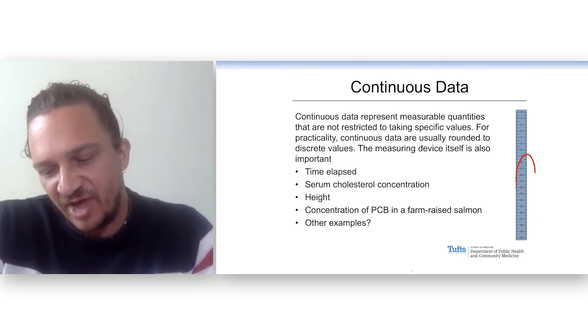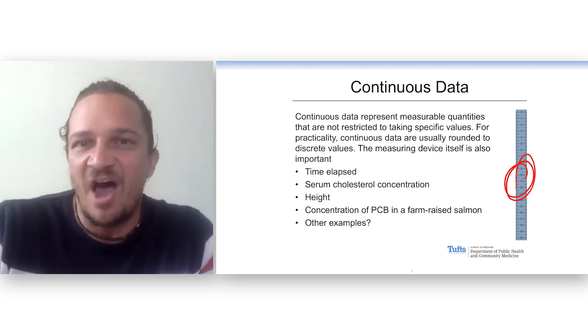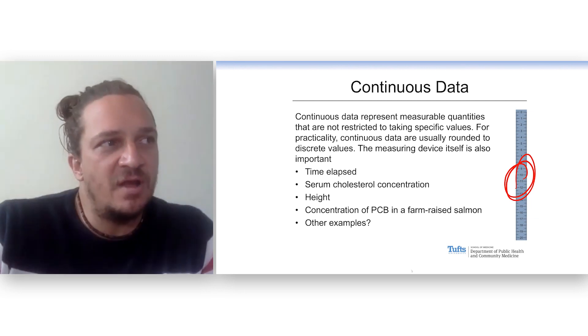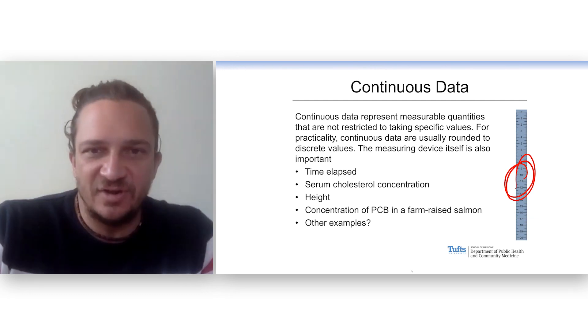If you had a better, better tape measure, you could actually see that one person is somehow a little bit taller than the other. And so continuous data are things such as time or the measurement of an enzyme or the measurement of anything that can take a range of values.